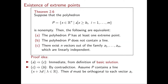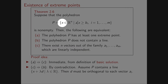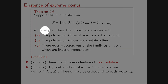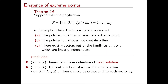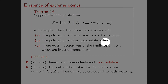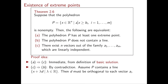Now we are ready to give the necessary and sufficient conditions for a polyhedron to have extreme points. Consider a polyhedron P = {x in Rn : Ai transpose x ≥ bi, i = 1, …, m}, assumed non-empty. Then the following three conditions are equivalent: (a) P has at least one extreme point; (b) P does not contain a line; and (c) there exist n linearly independent vectors among a1, …, am, the left-hand sides of the m linear inequalities defining P.